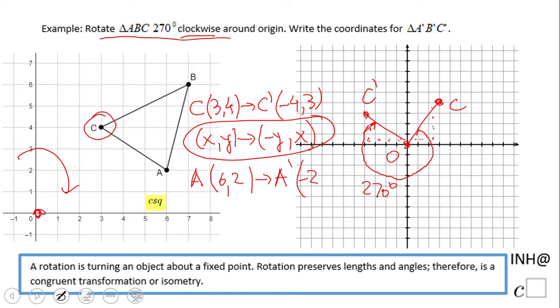Point B, which is (7, 6), becomes B prime which is negative 6, because we switch it, we put the y first, and then we put 7.